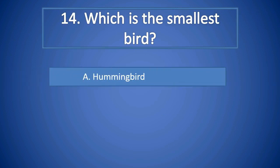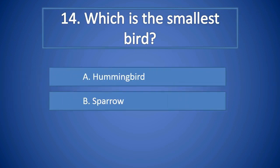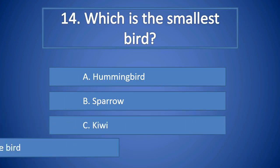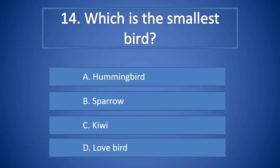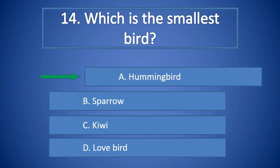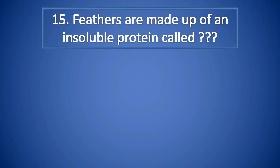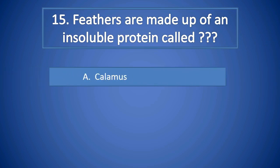Question Number 14: Which is the smallest bird? A. Hummingbird, B. Sparrow, C. Kiwi, D. Lovebird. Right answer is A. Hummingbird.